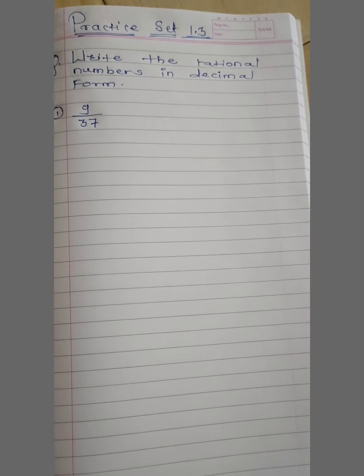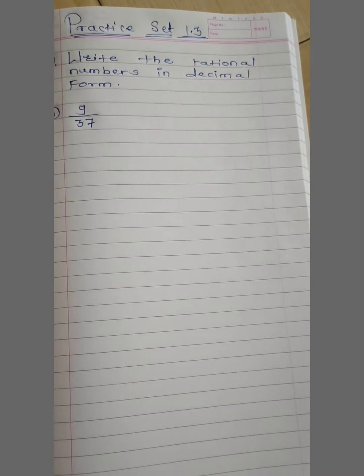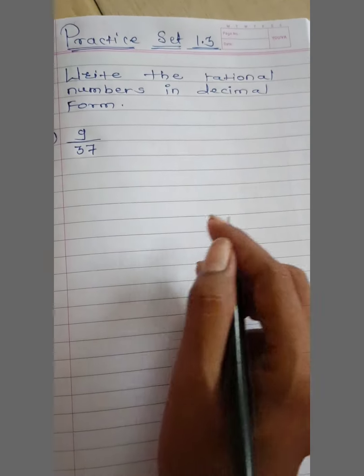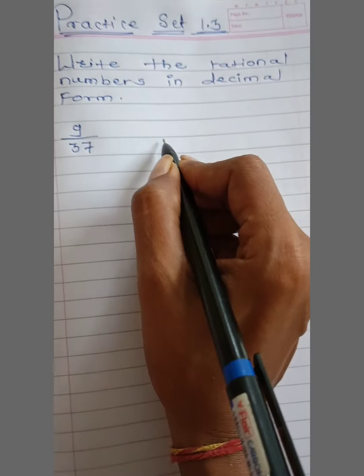Hello student, today in this video we will solve practice set 1.3. So question is, write the rational numbers in decimal form, 9 divided by 37. So answer is...